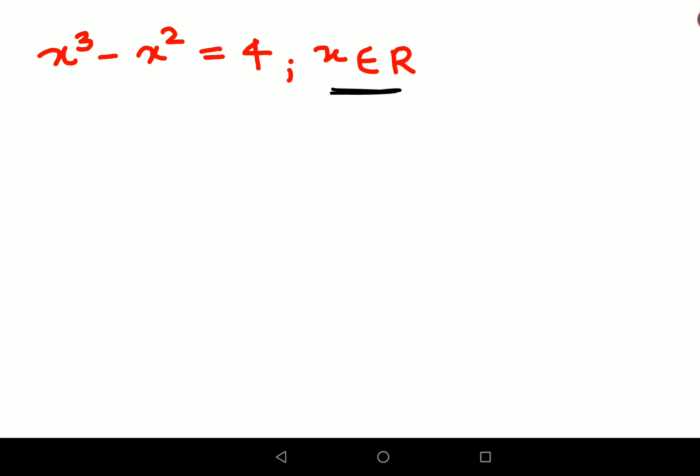Now please understand lot of people did what they took common and all of that, yes you can do it, it's not wrong, but the ideal way to solve this is use the method of substitution and you change this entire question to this format: x³ - x² - 4 = 0.